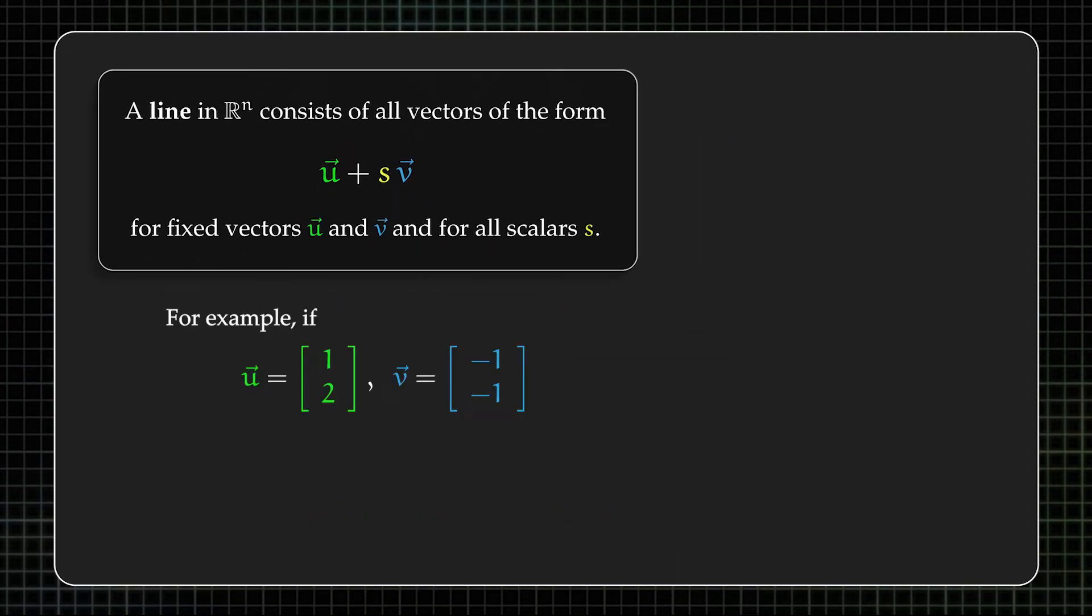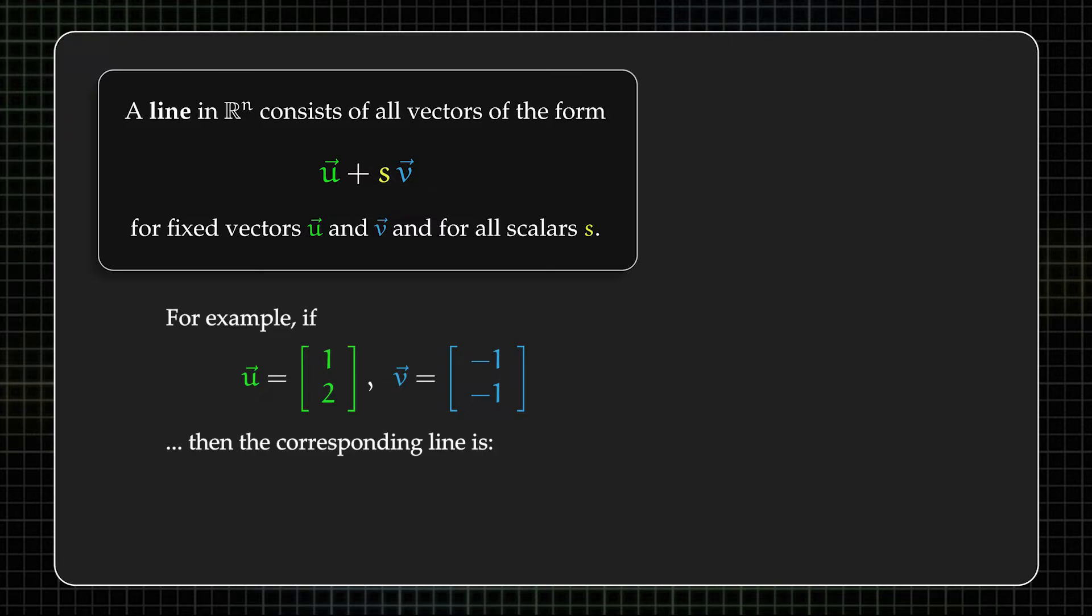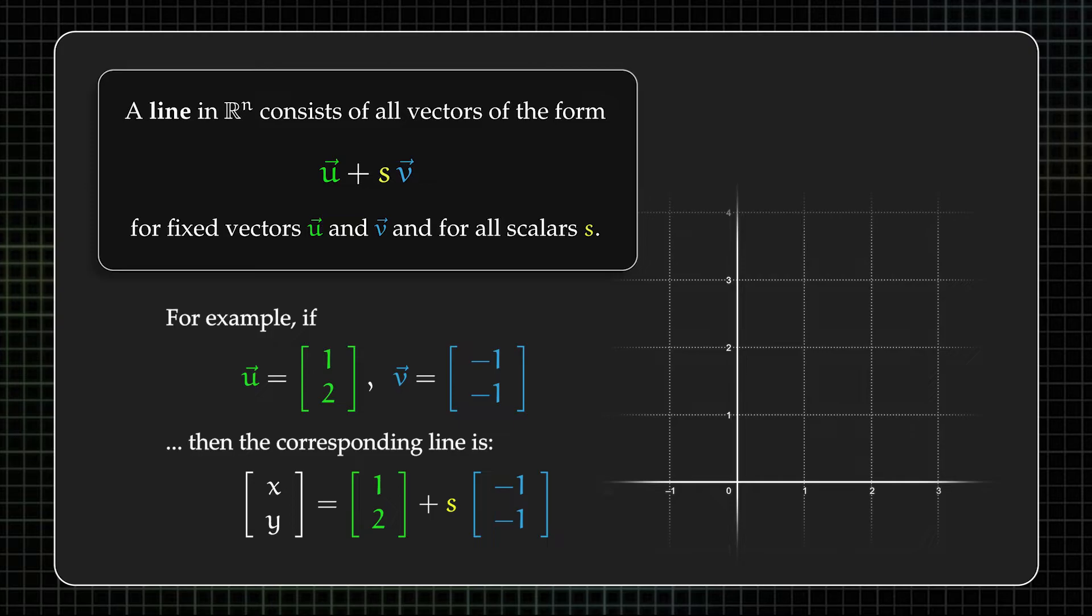For example, in two dimensions, if u is the vector [1, 2] and v is [-1, -1], then the corresponding line would be written like this. And we'd visualize it as the line that passes through the point (1, 2) in the direction of the vector [-1, -1].